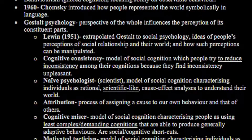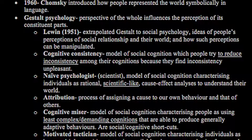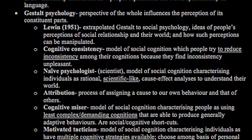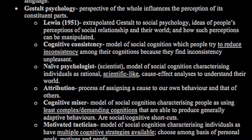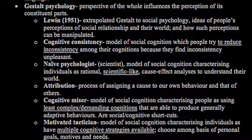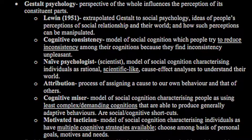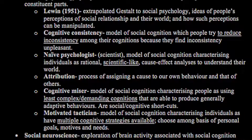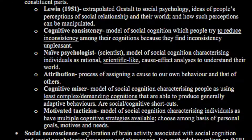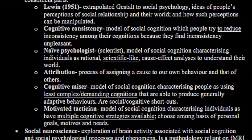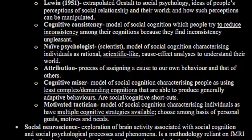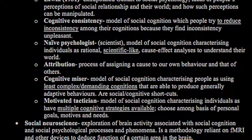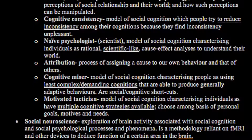There is a cognitive miser model of social cognition, characterising people as using the least complex or demanding cognition which are able to produce generally adaptive behaviours — these are social cognitive shortcuts, basically heuristics. It involves trying to avoid using too much cognitive demand, especially when there is only a limited process.